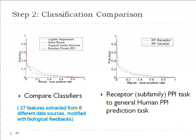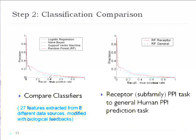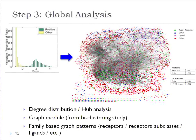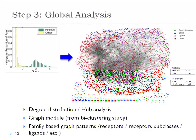There are many different ways to get features from a data corpus, and encoding feature evidence into features is very important for this framework. We tried different ways and decided on 27 features extracted from eight different data sources, incorporating several loops of biological feedback in building the feature set. Finally, we chose features, reference set, and model to specifically predict receptor-to-human protein interactions.